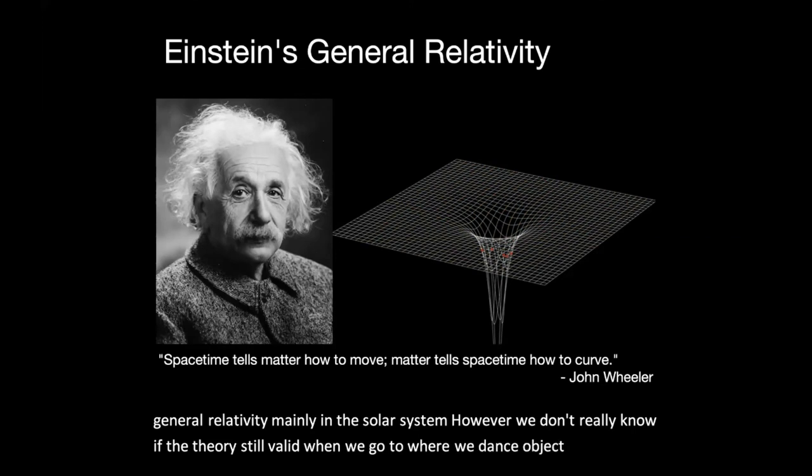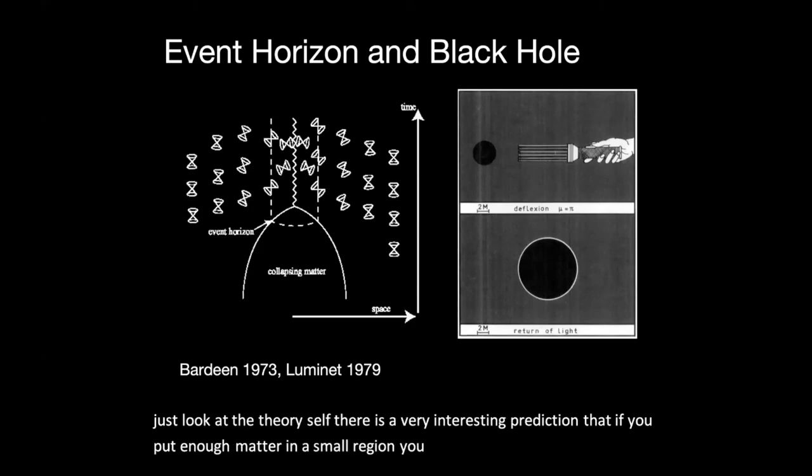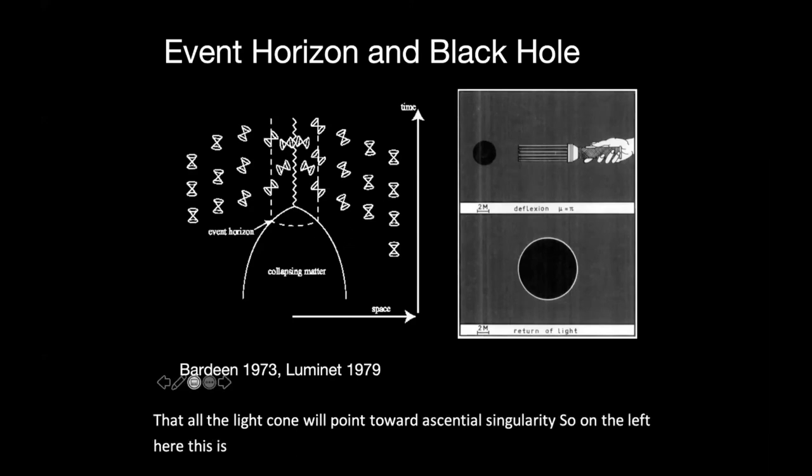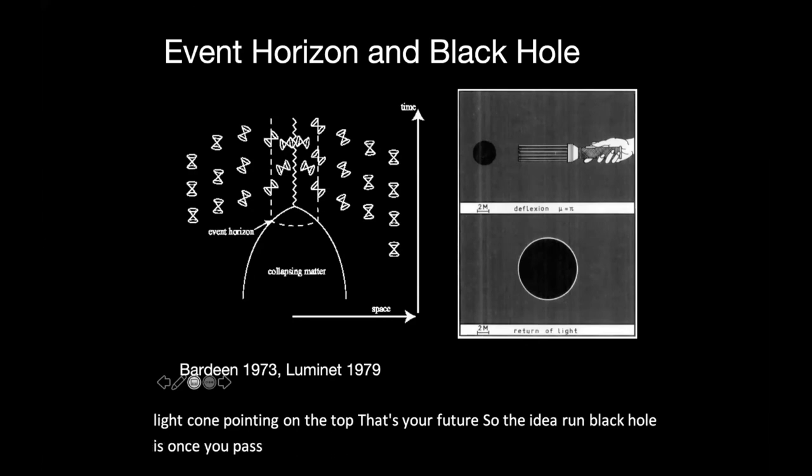And if you just look at the theory itself, there is a very interesting prediction that if you put enough matter in a small region, you can curve space-time so much that all the light cone will point toward a central singularity. So on the left here, this is actually a graph from a very old textbook. So these are the light cone, the cone pointing on the top. That's your future. So the idea of one black hole is once you pass this surface called the event horizon, all of your future actually point inside the black hole. There's no way for you to escape.